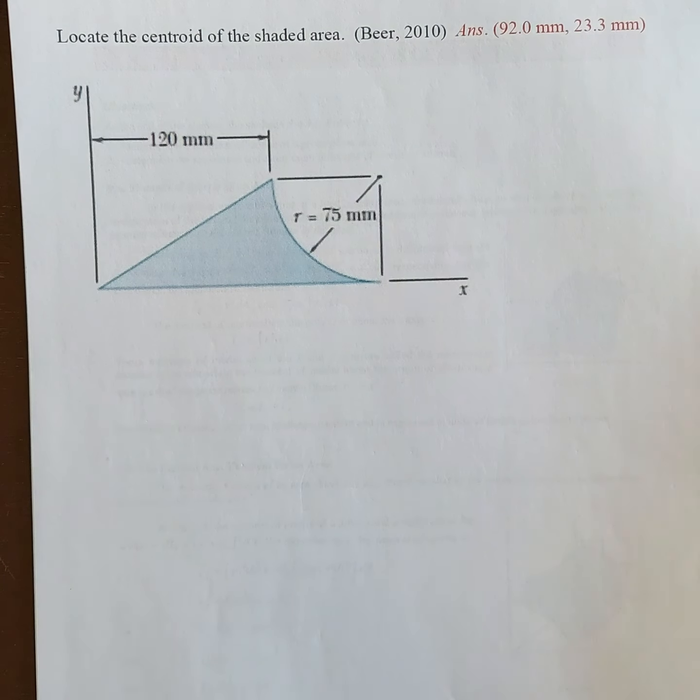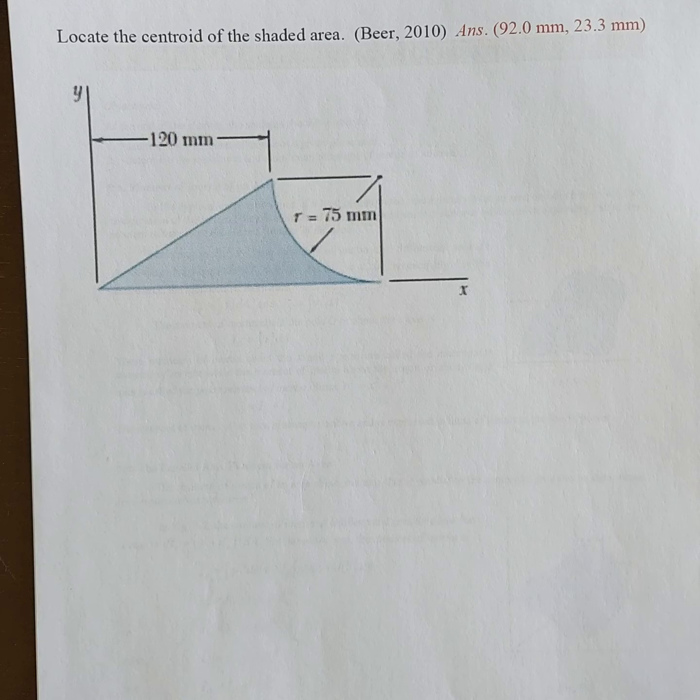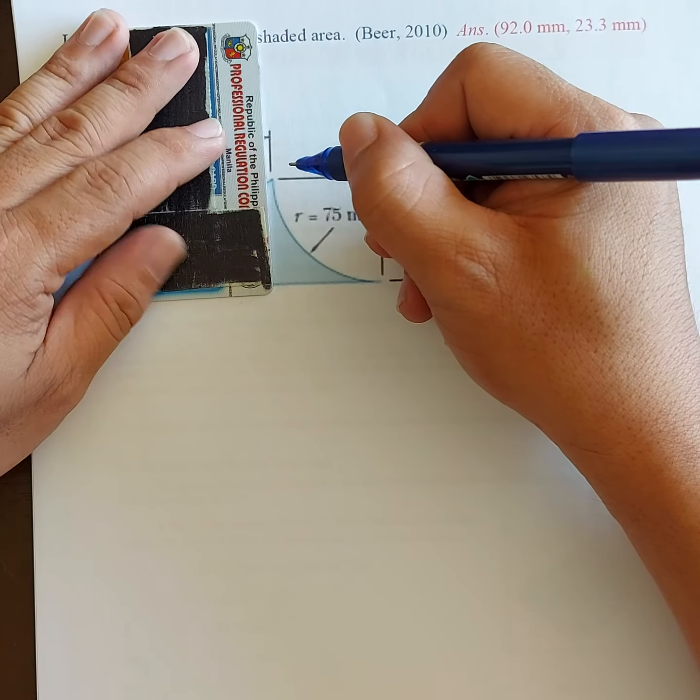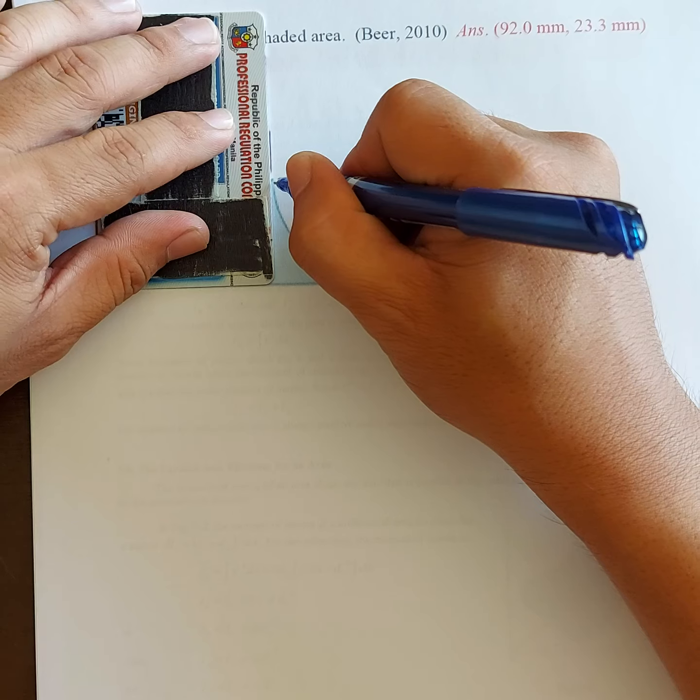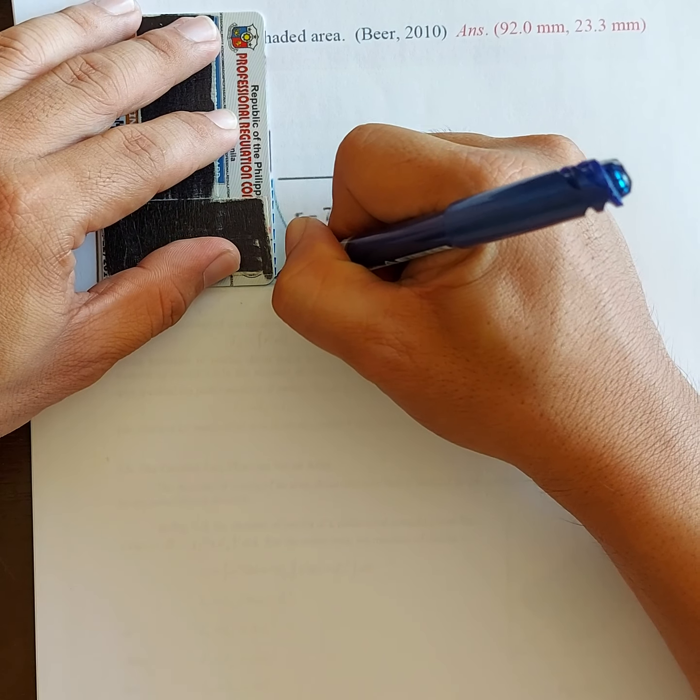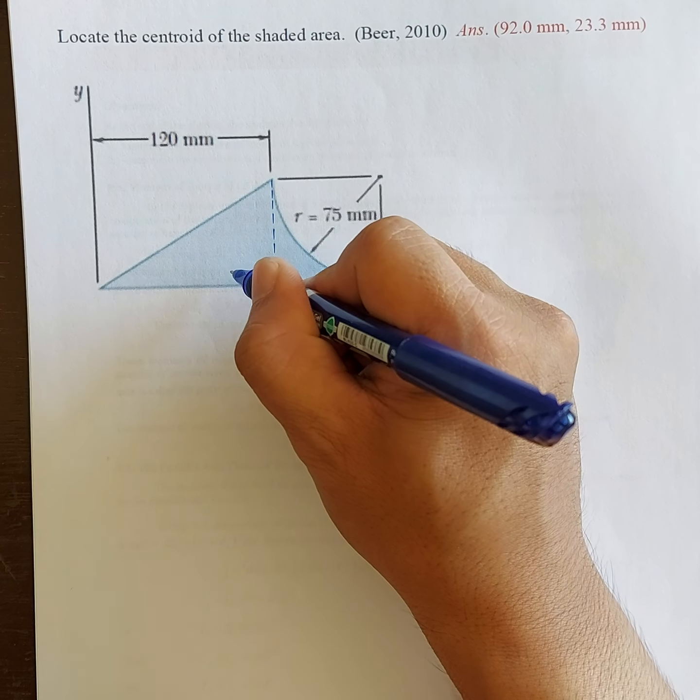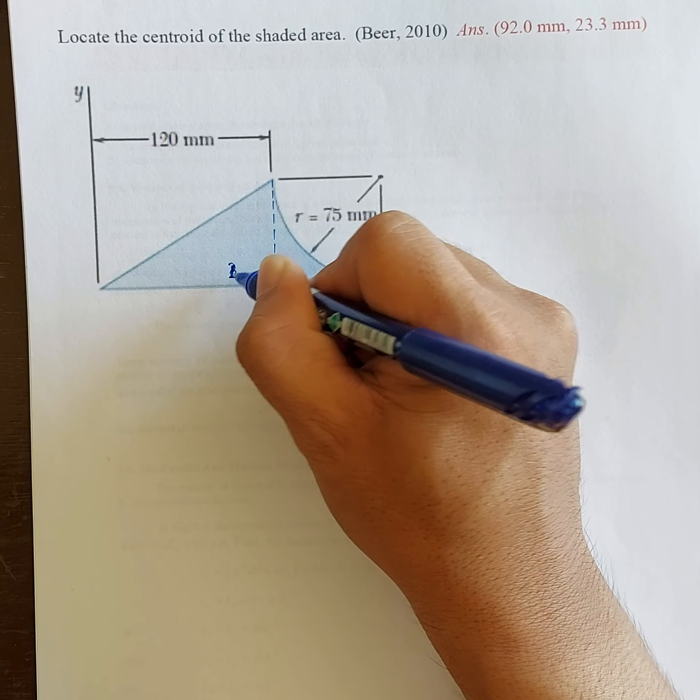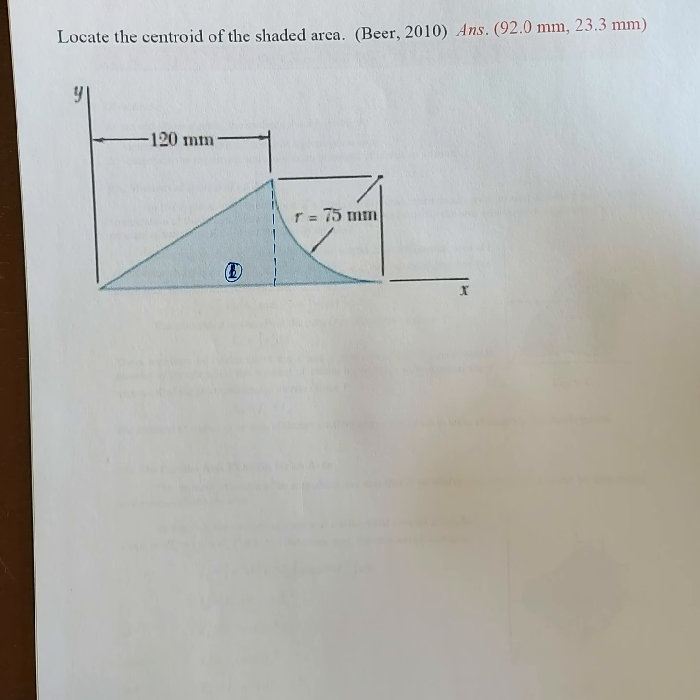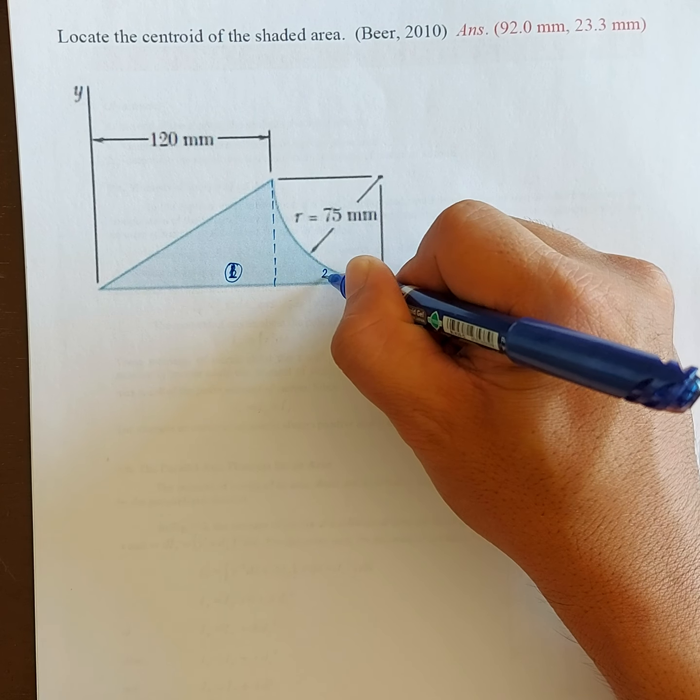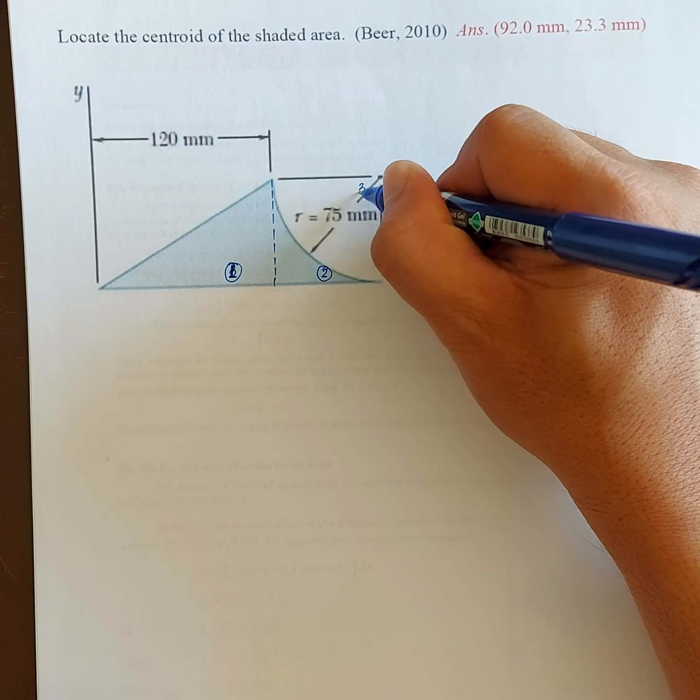So we have to divide this one into regular shapes. How do we divide it? Triangle. Okay. So area 1 is this triangle. Area 1, why 3? And then area 2 is the square.